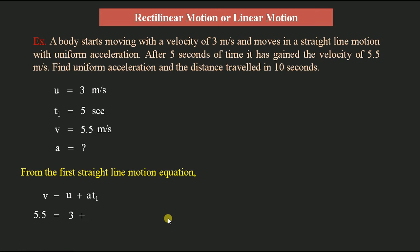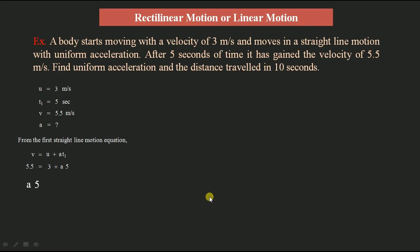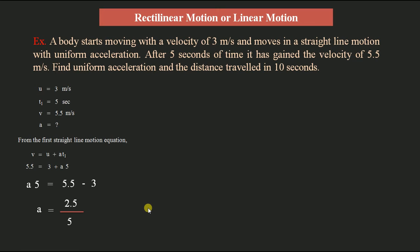Substituting values: 5.5 = 3 + a × 5. Rearranging: a × 5 = 5.5 − 3 = 2.5, so a = 2.5 / 5 = 0.5 meters per second squared. The uniform acceleration is therefore 0.5 m/s².